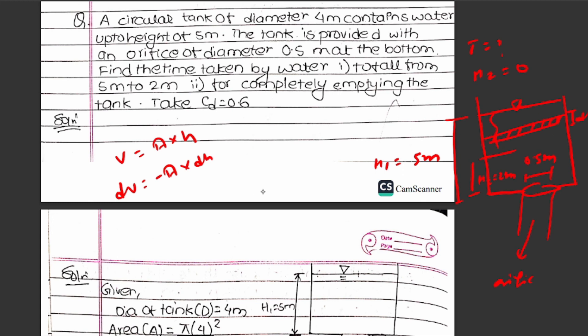The volume change over time: dV equals dQ. Now, Q equals cd times area times velocity. The area is the small orifice area, so Q = cd × a × theoretical velocity, which is root(2gh).